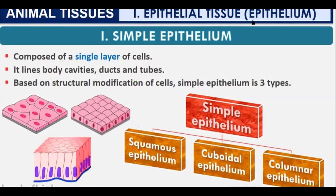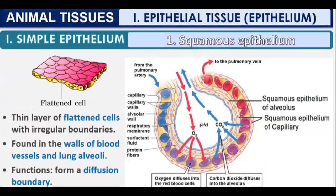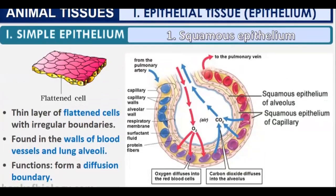Simple squamous epithelium is a thin layer of flattened cells with irregular boundaries — not a perfect straight line but a curved lining. It is found in the walls of blood vessels and lung alveoli.